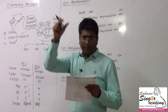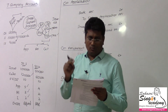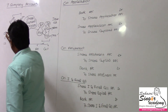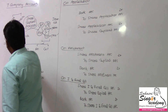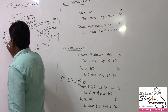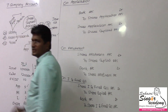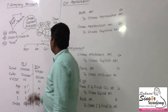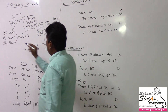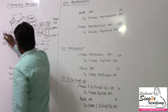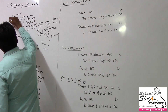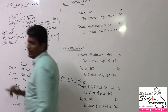The excess application money was refunded immediately. That means this is an oversubscription case. We will see the subscription, over-subscription, and under-subscription cases. This is a par issue case. In over-subscription, excess over-subscription is rejected.